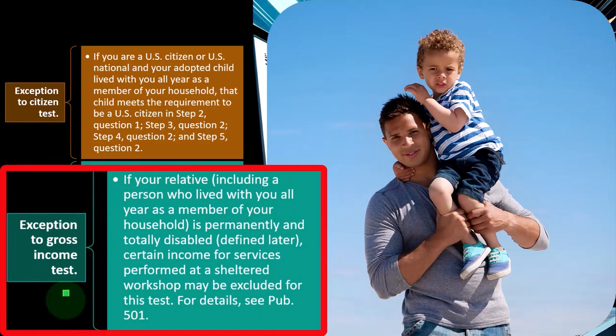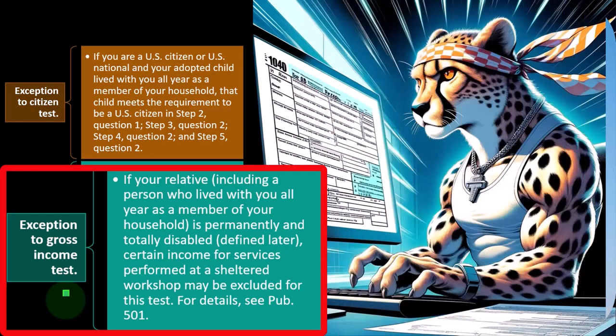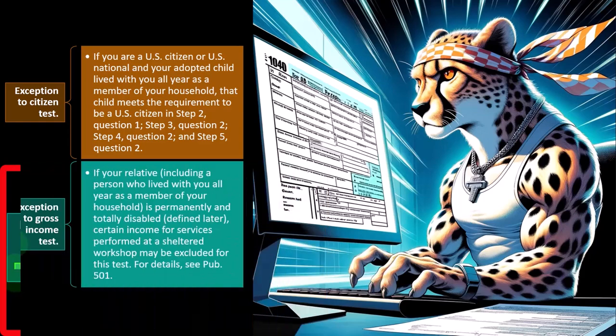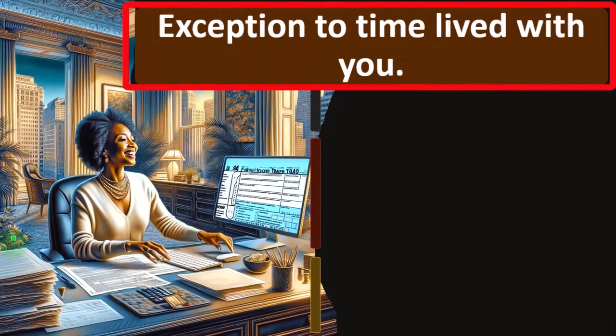Exception to the gross income test. If your relative — including a person who lived with you all year as a member of your household — is permanently and totally disabled, certain income for services performed at a sheltered workshop may be excluded for this test. We saw that there was a gross income test to see whether they qualify as a dependent, and you could have an exception to some of those items in certain situations.